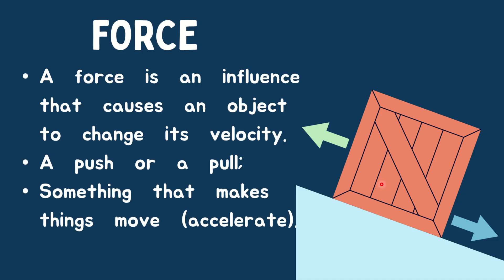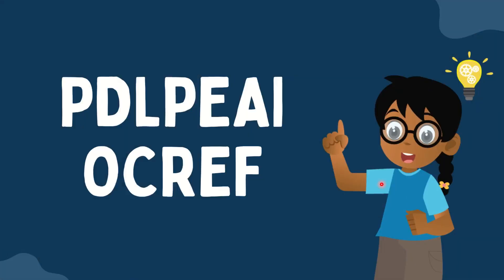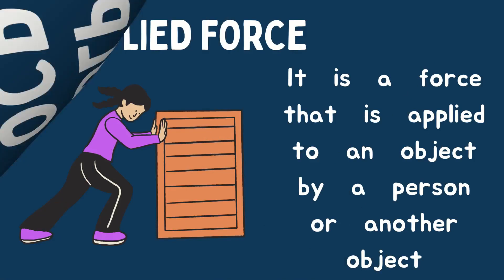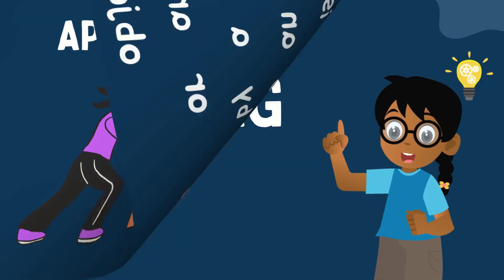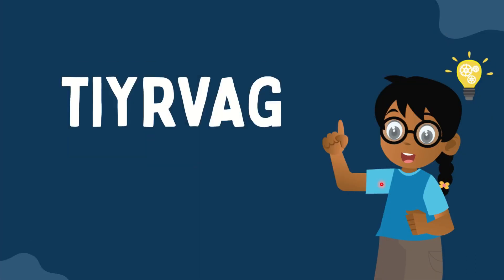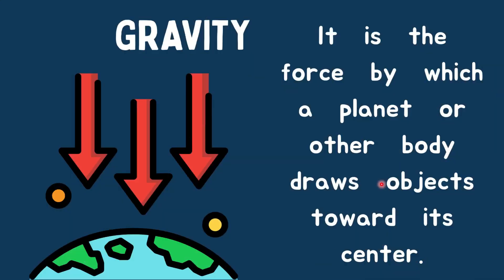Let's now proceed to our second word. This is applied force. It is a force that is applied to an object by a person or another object. Let's have the third word — it starts with letter G. That is gravity. It is the force by which a planet or other body draws objects toward its center. I know you are all familiar with this word.